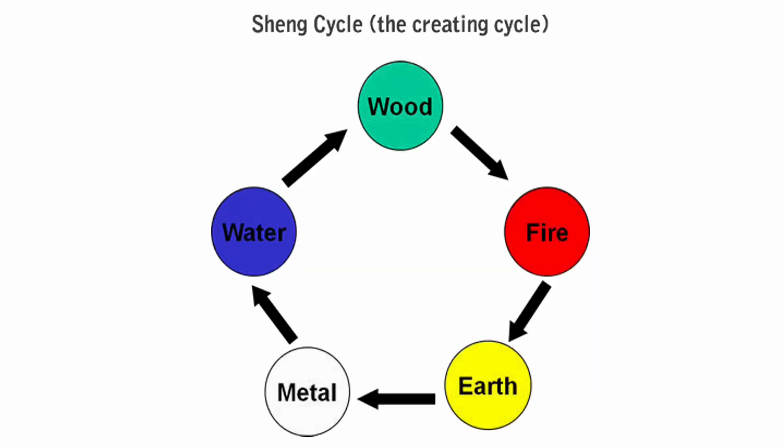The Sheng cycle is a creation cycle. It illustrates how each element generates and nurtures the next, similar to the relationship between mother and child. The concept of generation contains the ideas of production, stimulation, and augmentation.